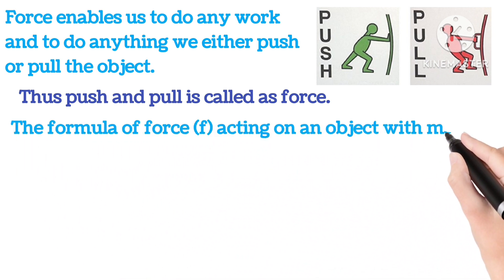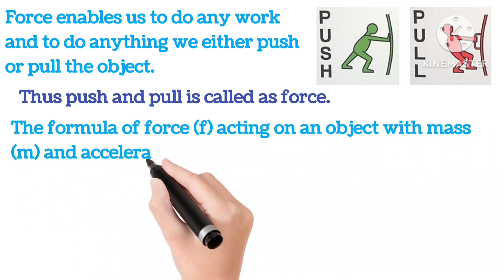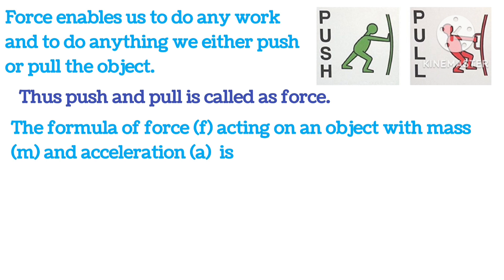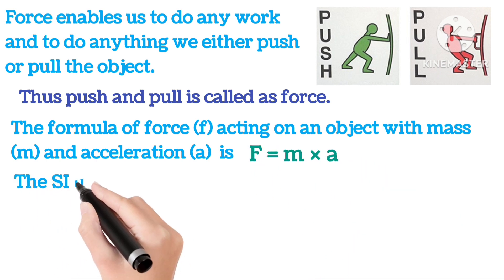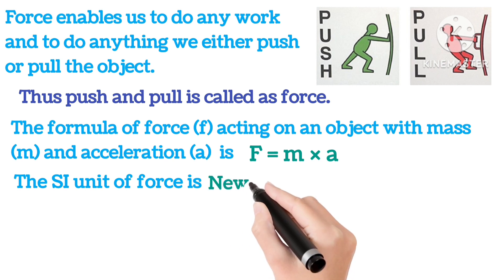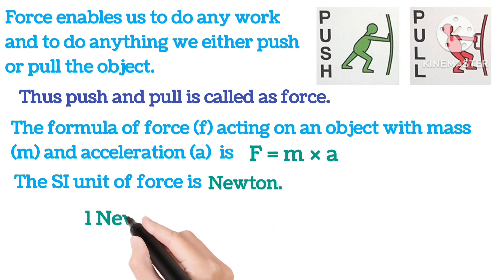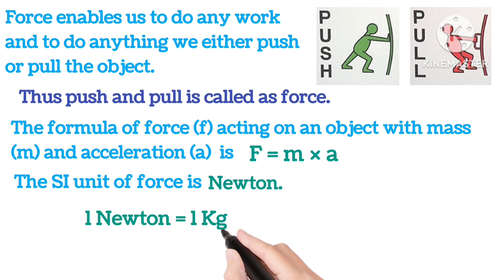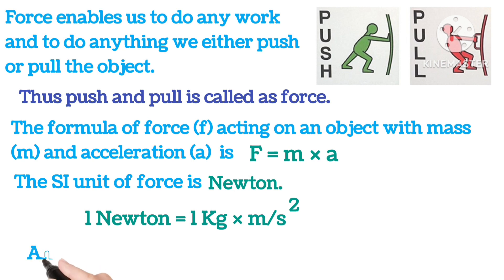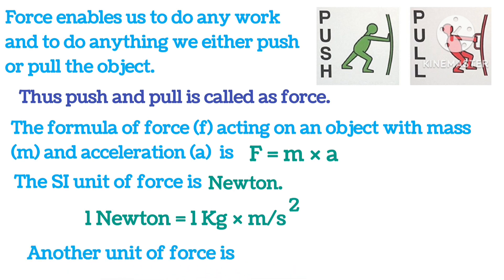The formula for force acting on an object with mass M and acceleration A is F = M × A. The SI unit of force is Newton. 1 N is equal to 1 kg·m/s². Another unit of force is Dyne.